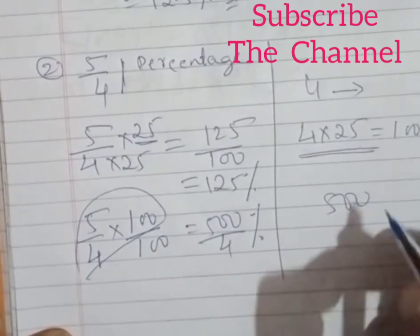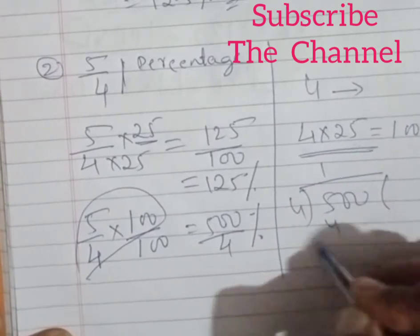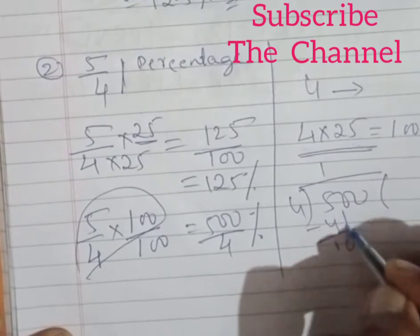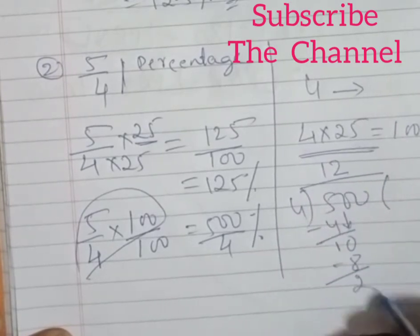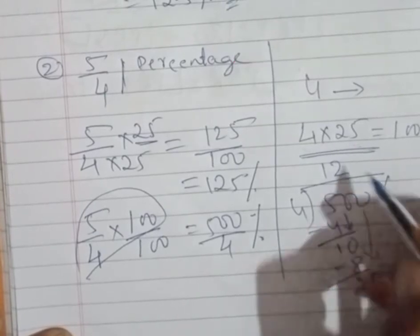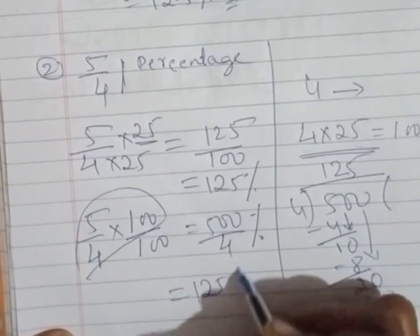But here, look at this one children, 500 upon 4 you are dividing. See here, very simple: 4 ones are 4, 5 minus 4, 1 remains. Then 4 twos are 8, minus this is 20. Then 4 fives are 20. Look at this one, you're going to get once again the same thing: 125 percent.